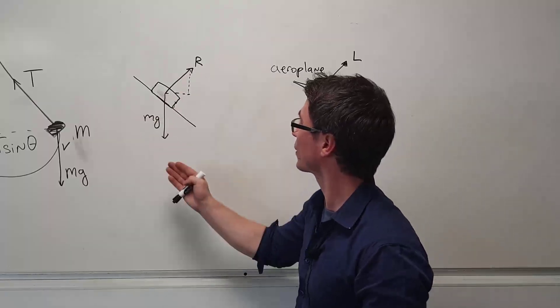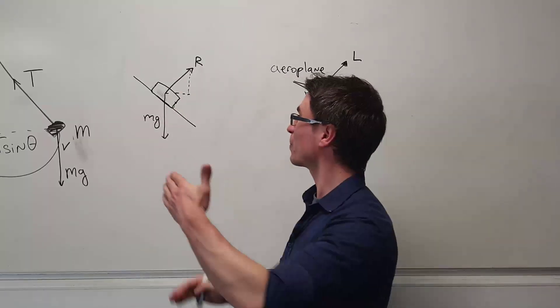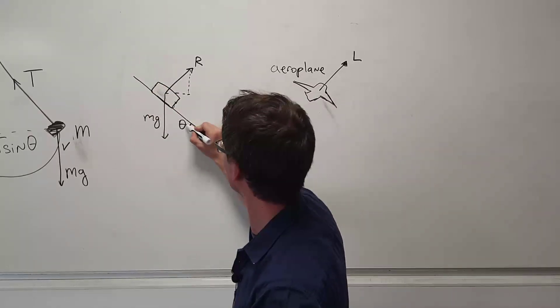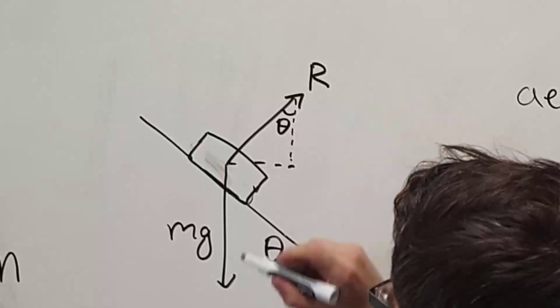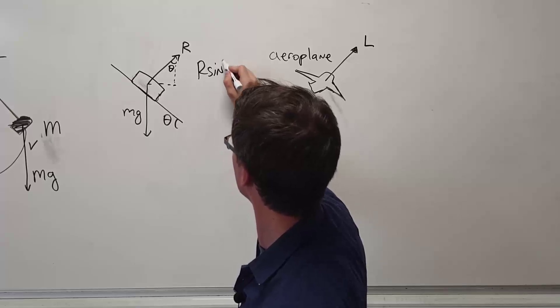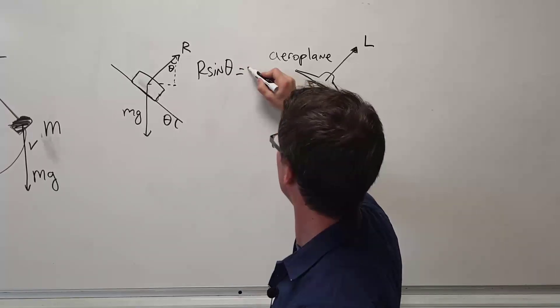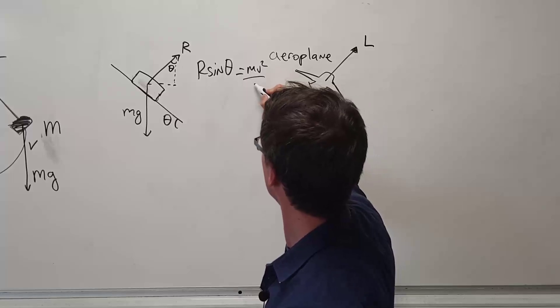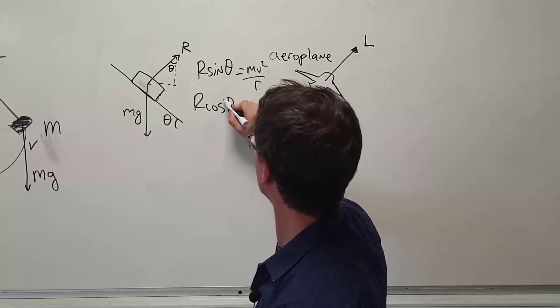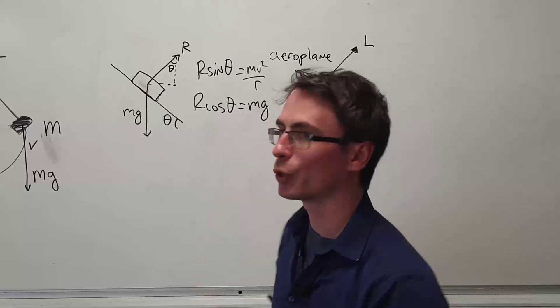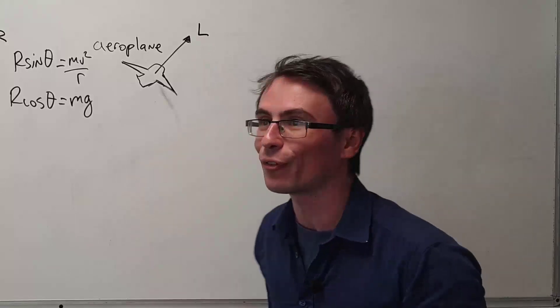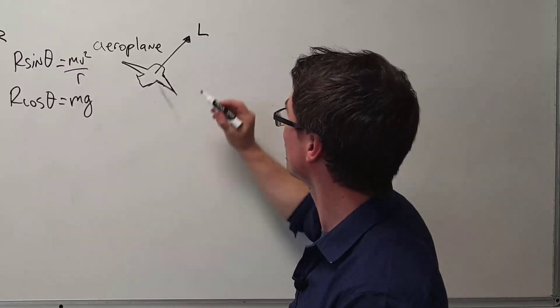Here are some examples. For instance, we could have a race car which is moving in the direction into the board. If the angle is theta, then this angle will be equal to this angle, meaning that sine theta will be equal to mv squared over r in exactly the same way, and cos theta will equal mg squared.